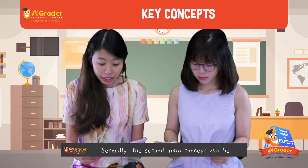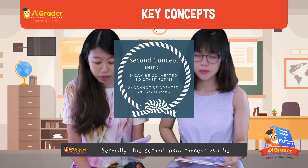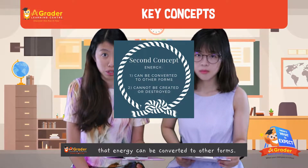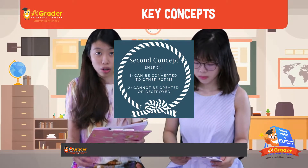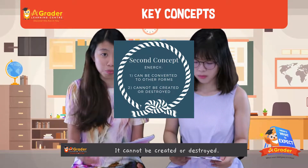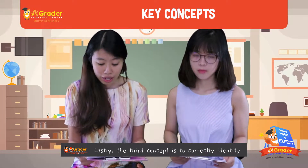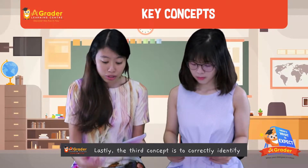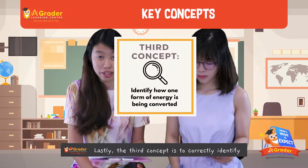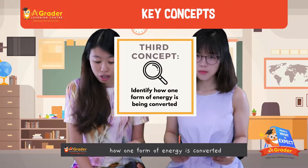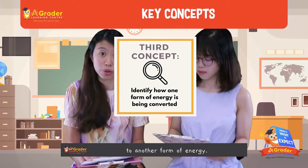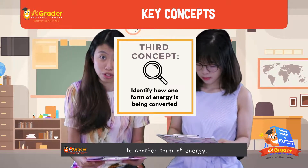The second main concept is that energy can be converted to other forms — it cannot be created or destroyed. And the third concept is to correctly identify how one form of energy is being converted to another form of energy.